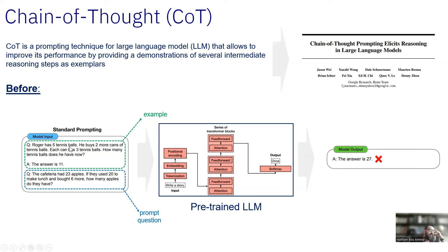For example, we say: 'Roger has five tennis balls. He buys two more cans of tennis balls, each has three. How many tennis balls does he have now?' Then once we give that example, we also give it a prompt question that we want the model to answer — a similar reasoning question like: 'The cafeteria had 23 apples. If they use 20 to make lunch and bought six more, how many apples do they have?' We pass this through the pre-trained LLM and it will give an answer, in this case 27. These are examples from this paper.